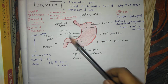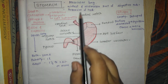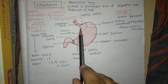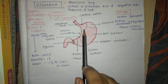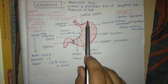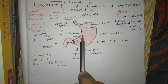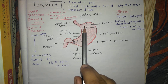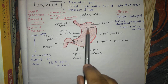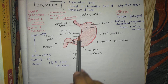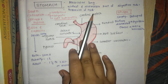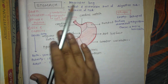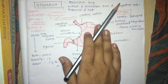The shape of the stomach: when it is empty, it is a J shape. When it is partially distended, it is a pyriform shape. And in the obese person, it is more horizontal.